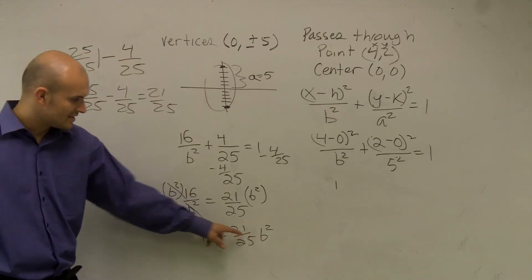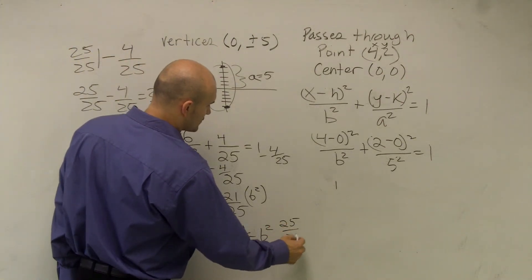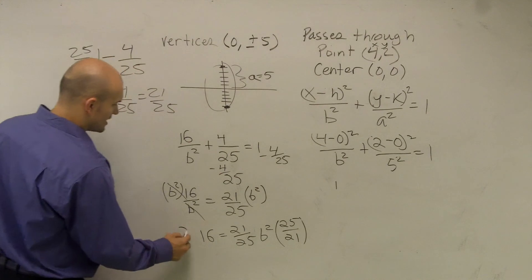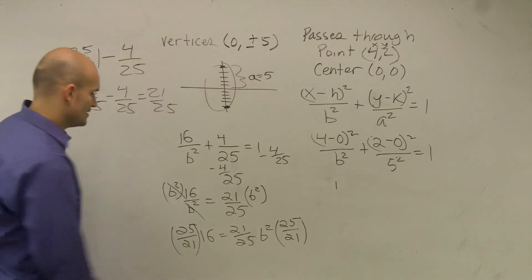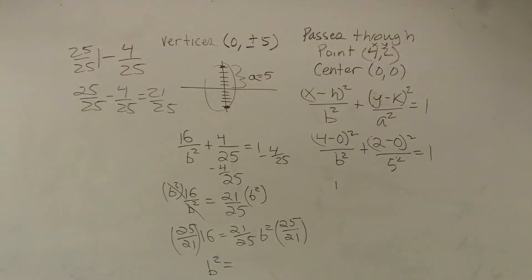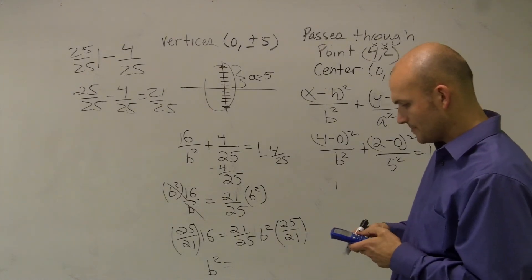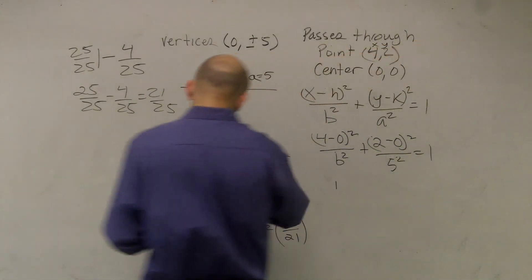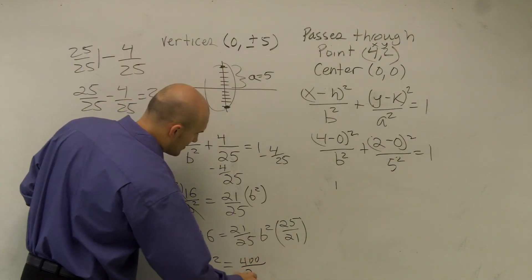Now to get my B² all by itself, I'll multiply by the reciprocal, which is 25/21 times 25/21. Therefore, B² equals 25 times 16, which equals 400, divided by 21.